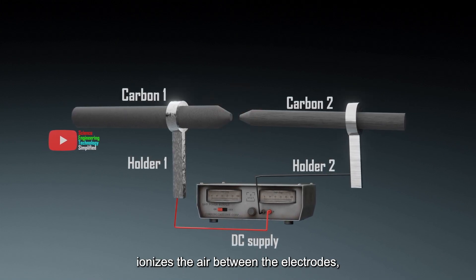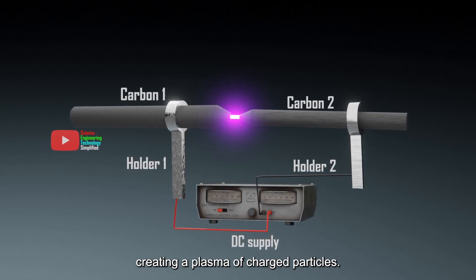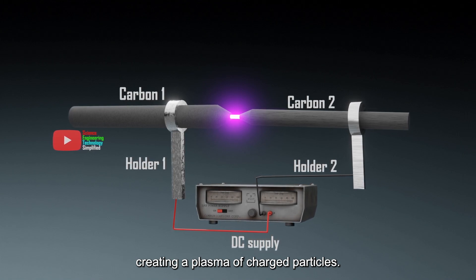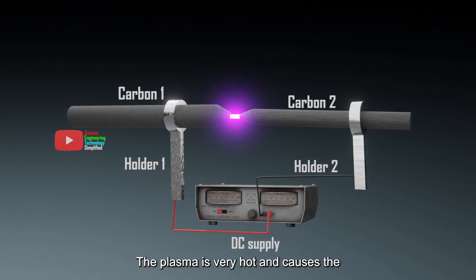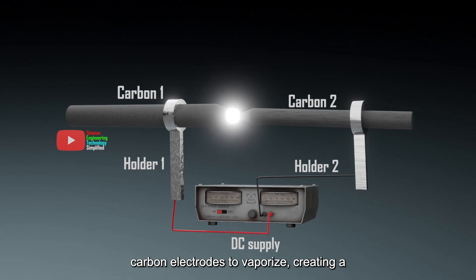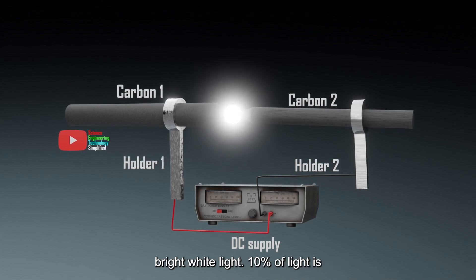This spark ionizes the air between the electrodes, creating a plasma of charged particles. The plasma is very hot and causes the carbon electrodes to vaporize, creating a bright white light.